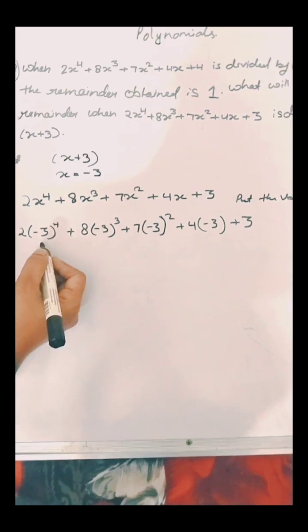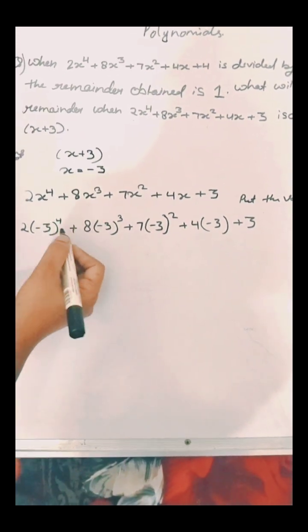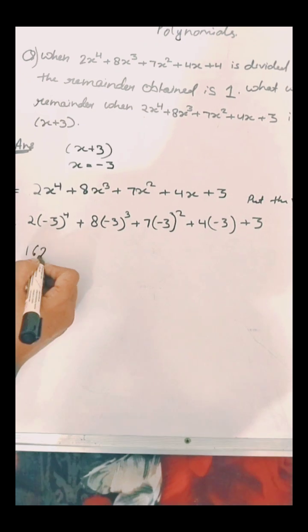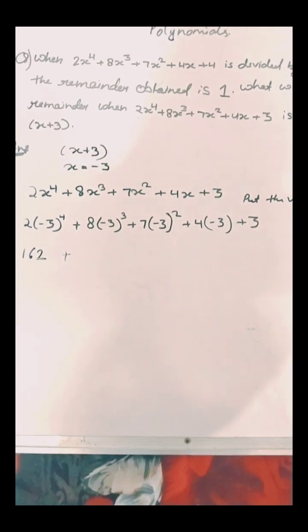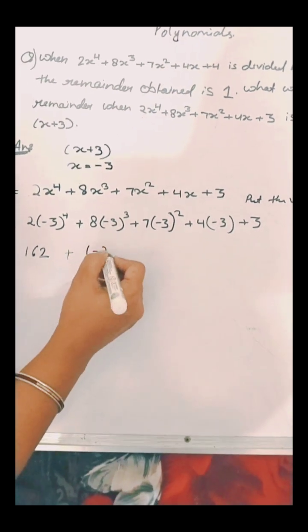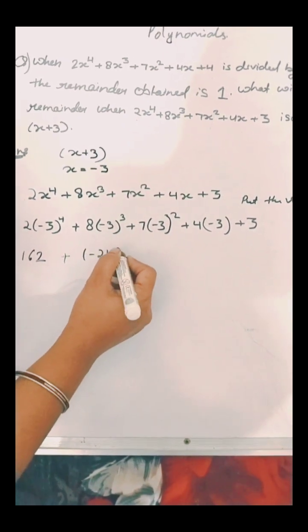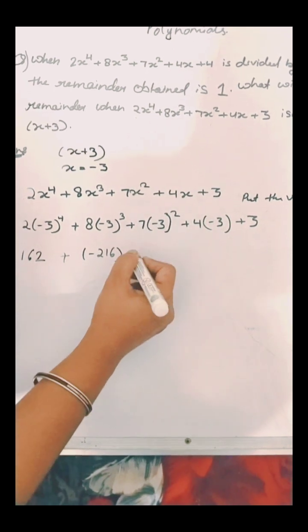So here by multiplying, 2 times minus 3 raised to power 4 we will get 162, and 8 multiplied by minus 3 raised to power 3 we will get minus 216, and by multiplying 7 by minus 3 raised to power 2,